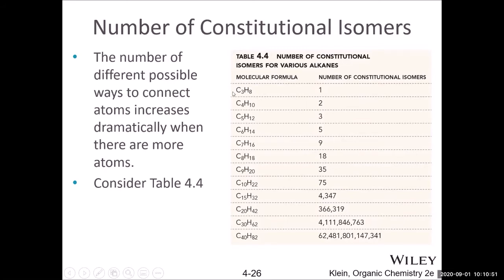Starting from methane, ethane, and propane, there are no isomers — only one structure each. Starting from butane, we have normal butane or 2-methylpropane, giving two compounds with the same formula but different structures. As you have more carbons, the number of isomers increases very dramatically — trillions and trillions of isomers for 40 carbons.